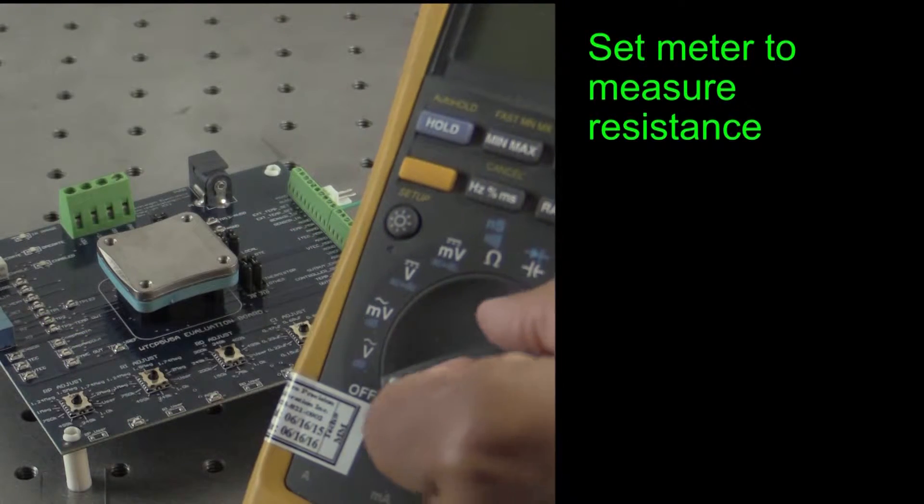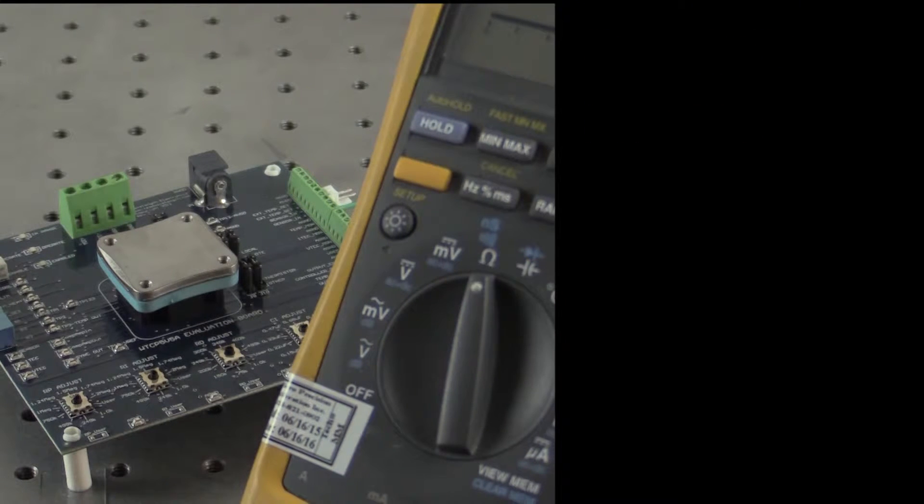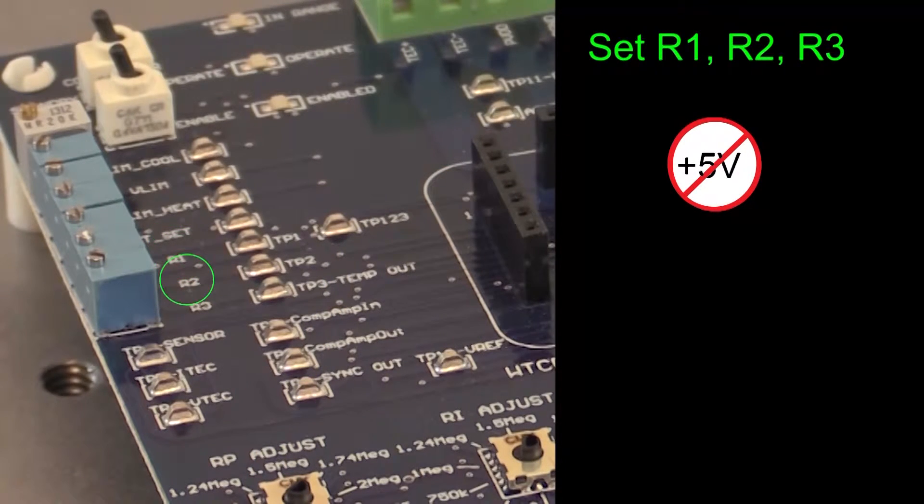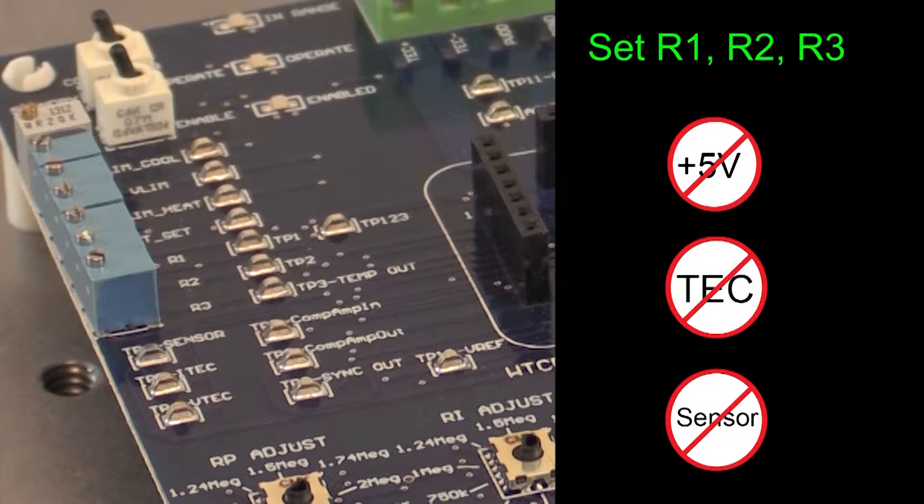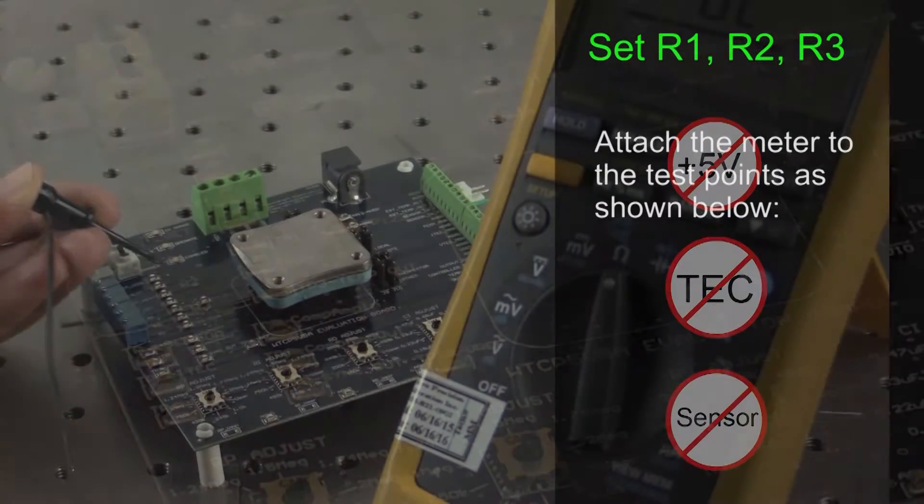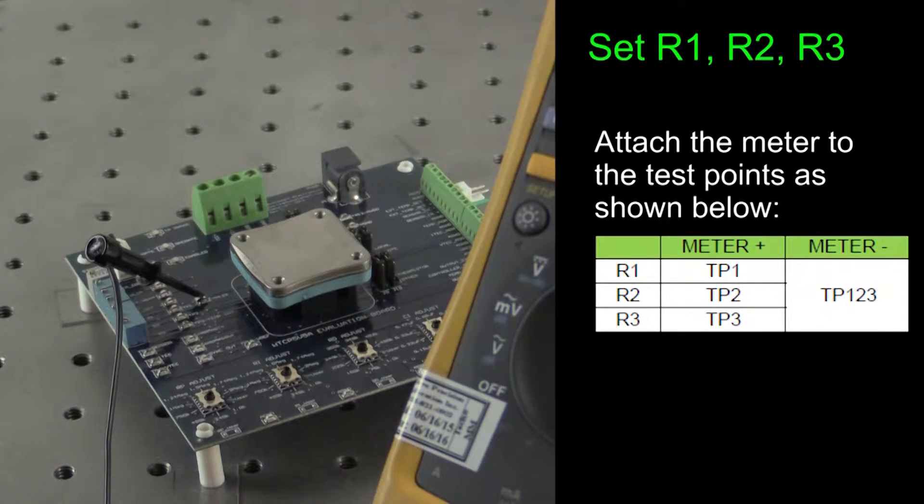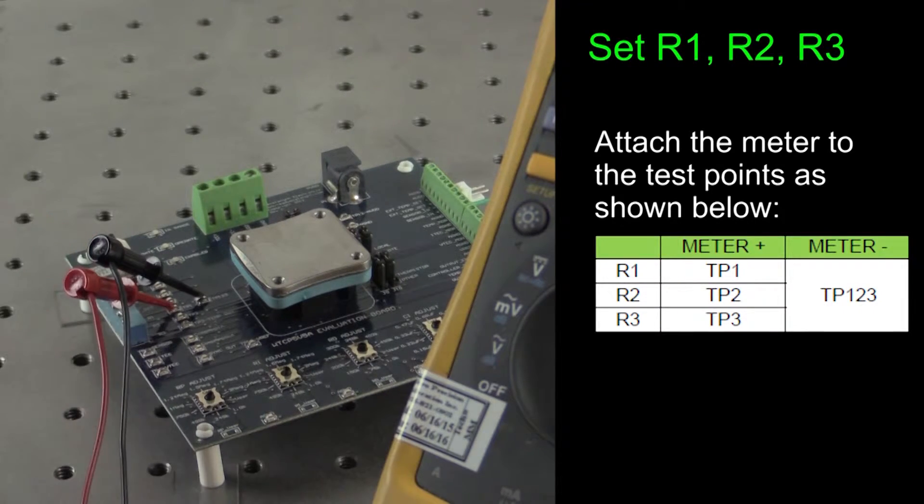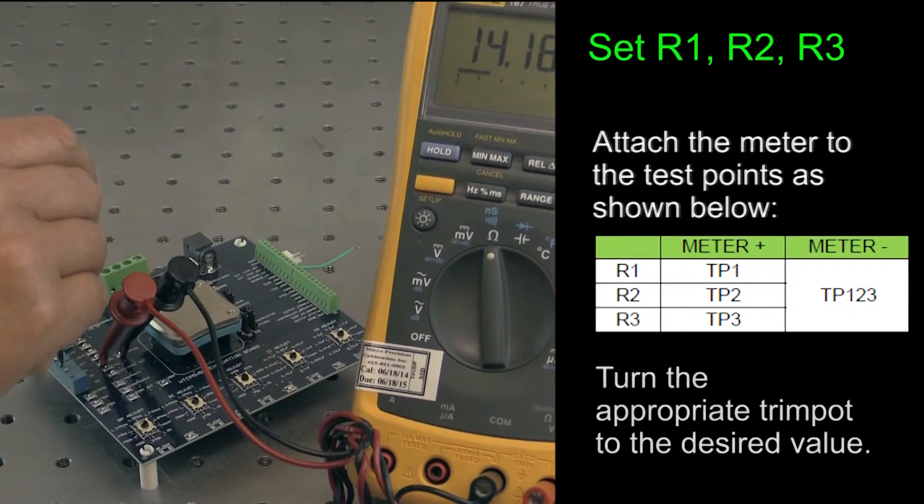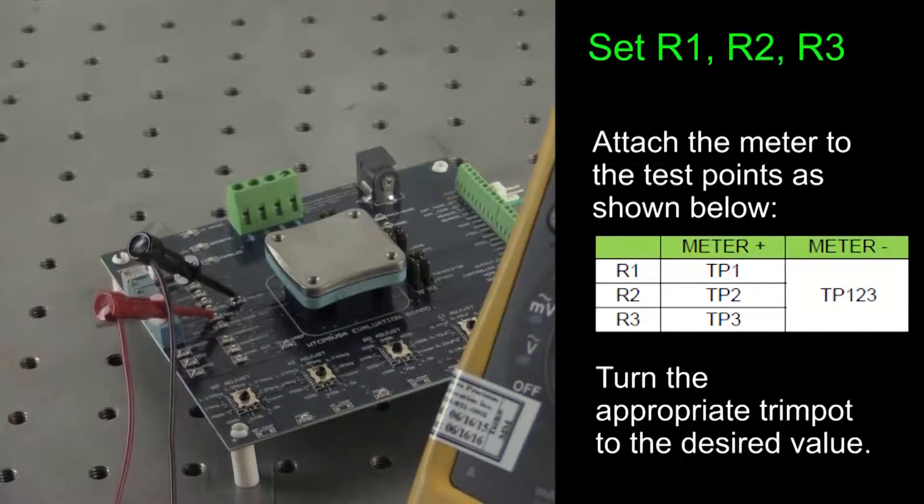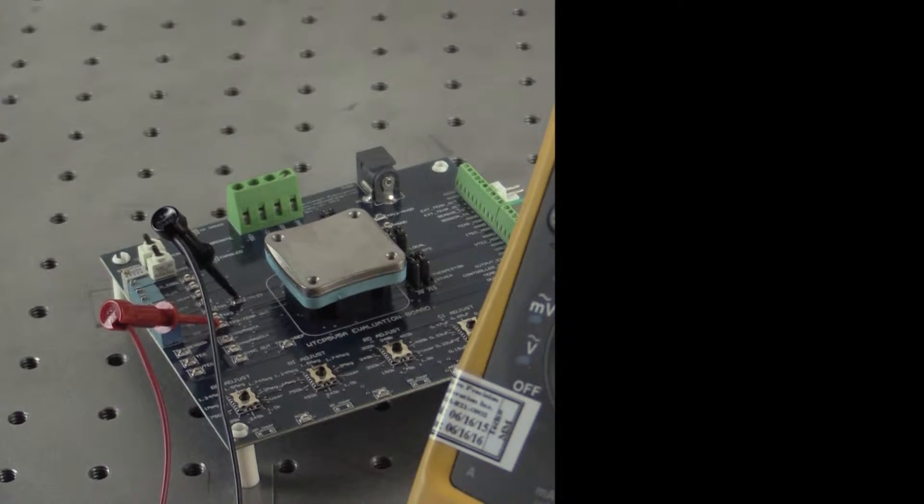Now you need a multimeter that can read resistance and voltage. Initially, set it to read resistance. Without power to the eval board, we'll set the values to properly bias your thermistor: R1, R2, and R3. Make sure the thermoelectric and thermistor are not connected to the eval board. Attach the common terminal of the multimeter to the test point TP123. This will remain for the duration of setting R1, R2, and R3. Attach the positive lead of the multimeter to the TP1 test point. Rotate the potentiometer labeled R1 until the value calculated for R1 in the required settings is reached. For our demo, R1 needs to be 14.2k ohm. Repeat this for R2 and R3, moving the positive lead to TP2 and TP3 respectively.